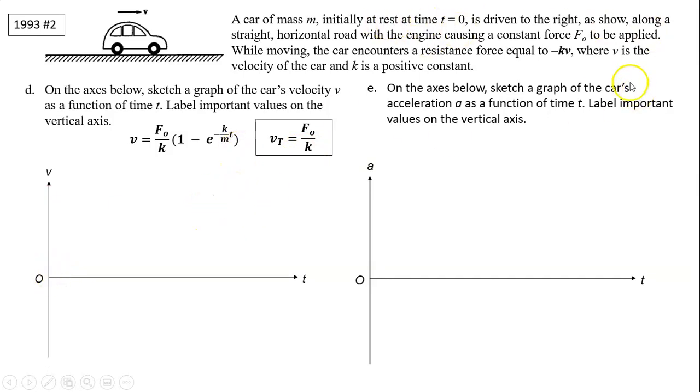We also know as v increases, resistance force increases. So your acceleration should decrease. Slope should decrease. So your graph should have a shape like this. In the v-t graph, slope is acceleration. Acceleration is decreasing. Acceleration becomes 0 at infinite time.